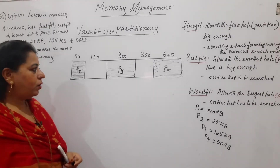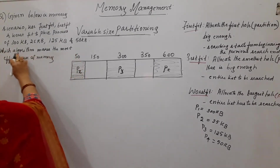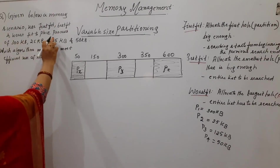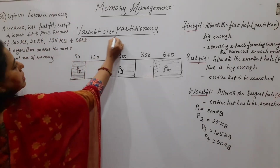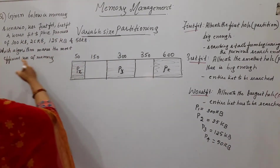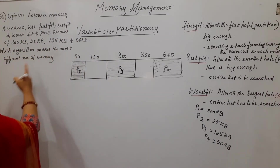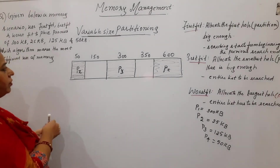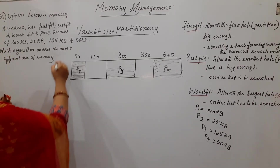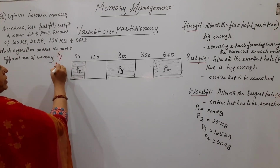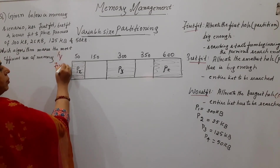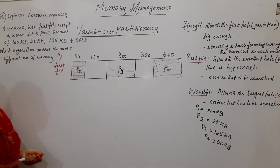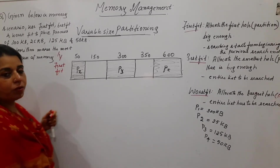Then you start applying the algorithms, because what they have asked is you have to make use of first fit, best fit, and worst fit using variable size partitioning, and determine which algorithm makes the most efficient use of memory. The very first job is for you to write down that you are carrying out the first fit algorithm, applying the first fit algorithm for this memory scenario to place those four processes.